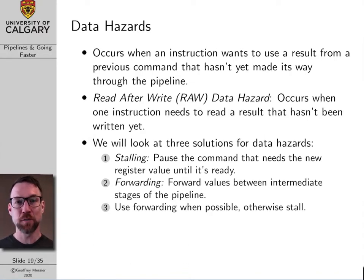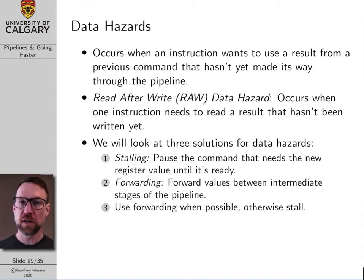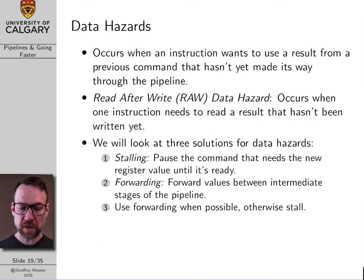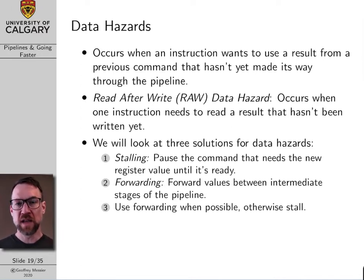The first type of pipeline hazard we're going to spend time on is the data hazard, which we illustrated with our first hazard example. A data hazard is when one command wants to use a result that isn't ready yet because the command that came before it isn't finished. We sometimes refer to these as read-after-write or RAW data hazards — when an instruction needs to read something that has to be written by a previous command and it hasn't happened yet.